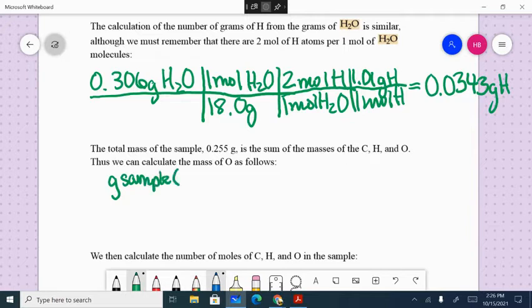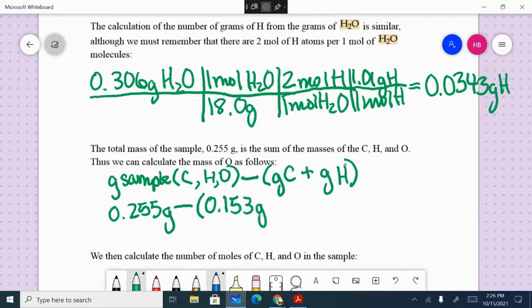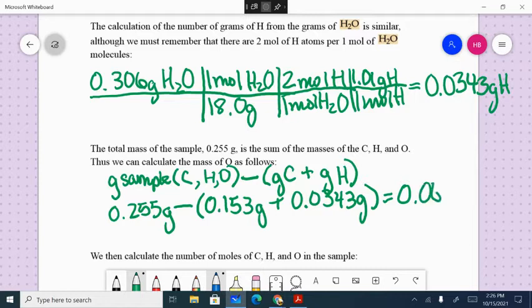In order to figure out how much oxygen we have, let's subtract off what we calculated as the grams of carbon and also the grams of hydrogen. So we have 0.255 gram sample. We'll subtract off our carbon at 0.153 and our hydrogen at 0.0343. And we get a mass of oxygen of 0.068.